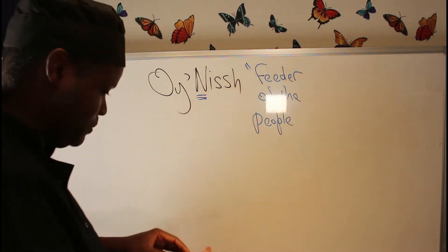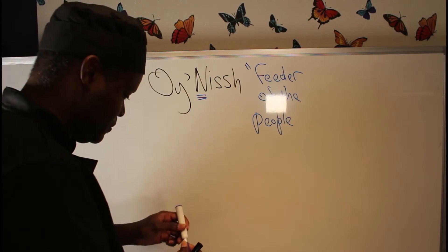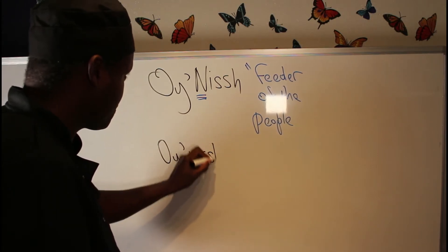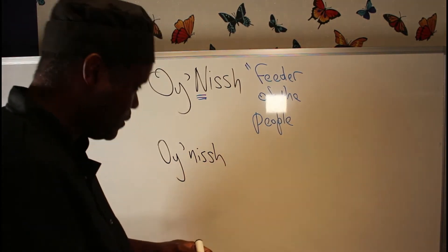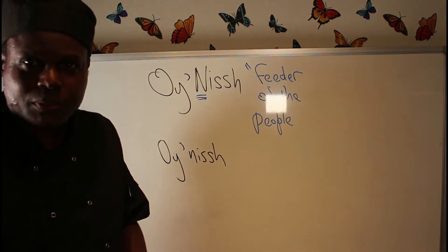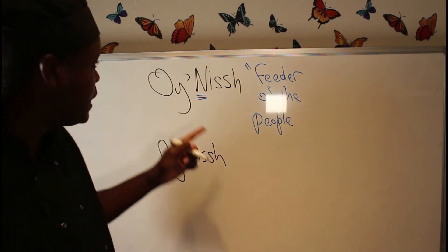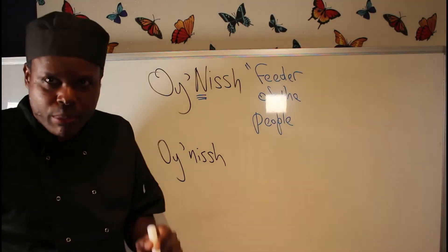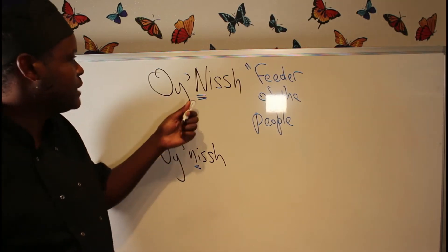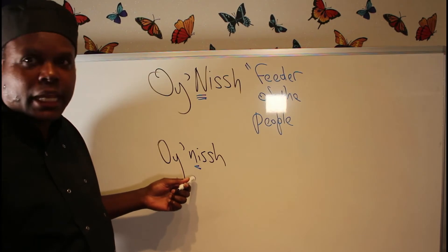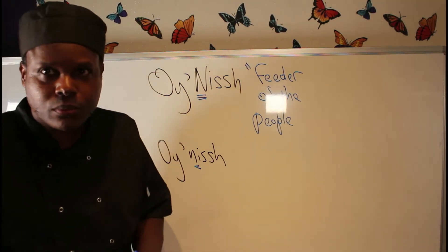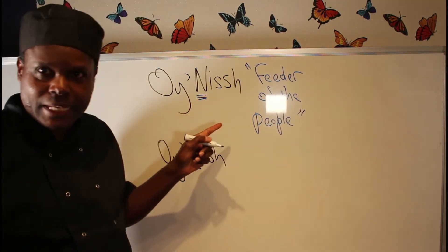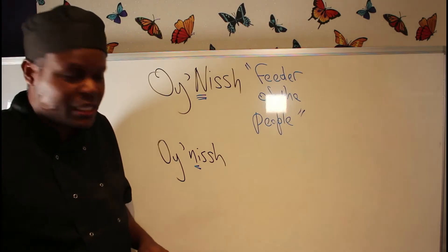There's a second version of my name. In the second version, you've got Oynish with a capital N, but secondly you've got Oynish with a common N, or lowercase. Sometimes we say capital N or uppercase N, or common N or lowercase N. So Oynish means feeder of the people when used with a capital N. When used with a common N, it means condiment.